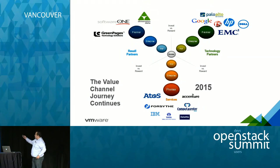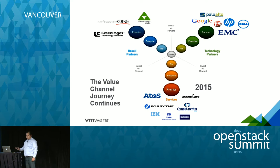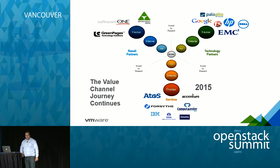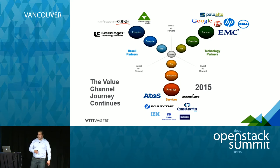We think of partners across three angles: pure technology partners like Google, Palo Alto Networks, HP, and EMC; system integrator partners like Atos, Accenture, and Computacenter; and reseller partners like Dimension Data and Software One. Each has a specific relationship with dedicated teams, and in some cases we have dedicated partner managers on both the VMware side and the partner side.